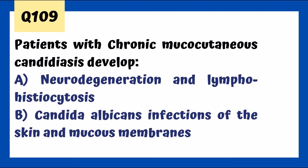Patients with chronic mucocutaneous candidiasis develop candida infections. This is associated with defects in AIRE — AIRE is involved in negative selection. A problem with AIRE leads to a T-cell defect, which is exactly what we see in chronic mucocutaneous candidiasis, causing all symptoms including candida infection.